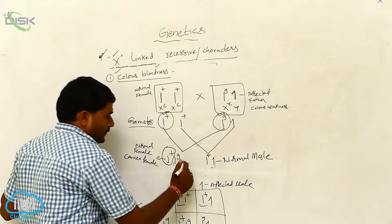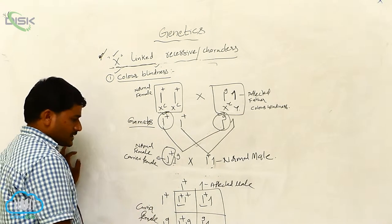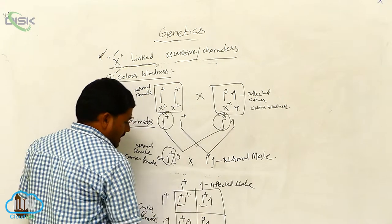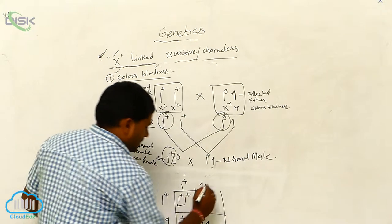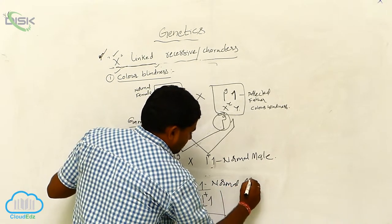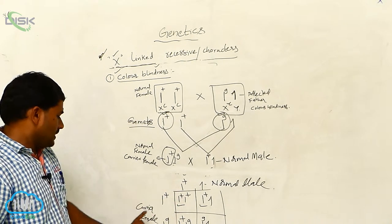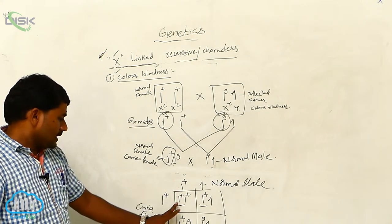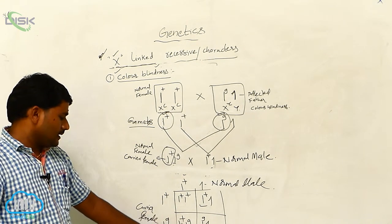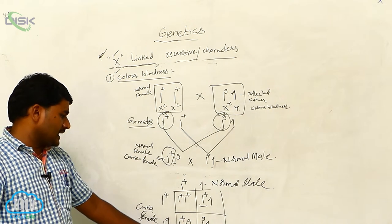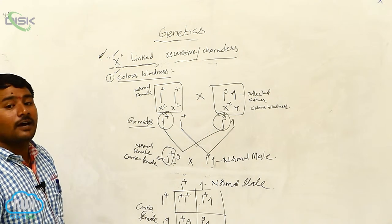If you go for F1 and F2 generation — this is F1 generation. If you go to the F2 generation, these are normal males, not affected. When you take normal male and carrier female: 50% all the females are normal, and 50% are the carriers. 50% of the males are normal, 50% of the males are affected.